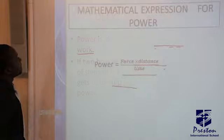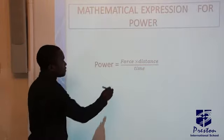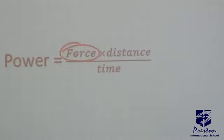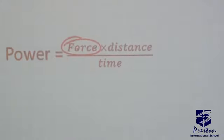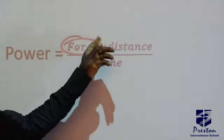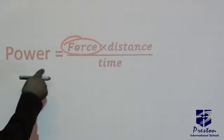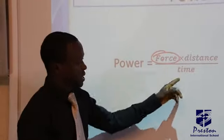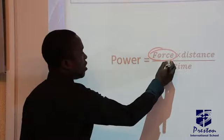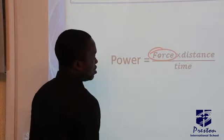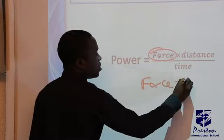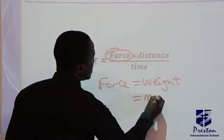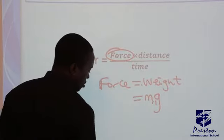Let's look at it better. Power is force times distance over time. Don't forget, when we were treating work, we said work is force times distance. So now, power is work over time — that is, the rate of doing work is power, and work is force times distance. Don't forget, your force could be your weight, which could be mass times acceleration due to gravity.